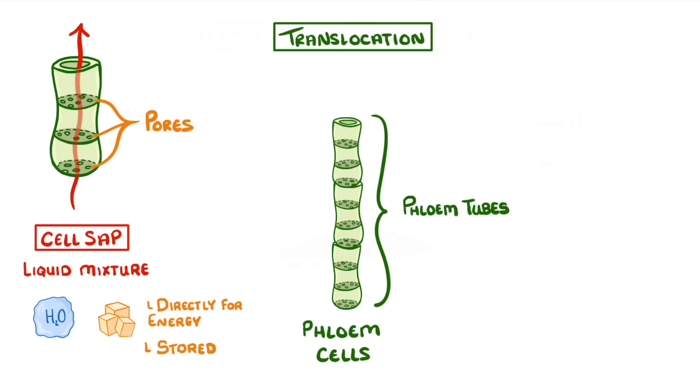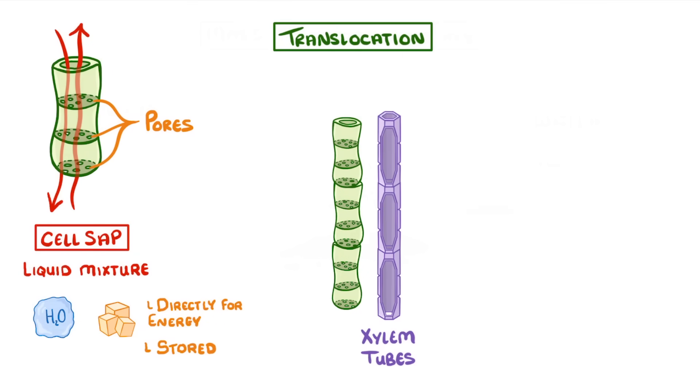One last thing to point out is that the phloem can transport substances in either direction, so up or down the plant. Next to the phloem tubes we have xylem tubes. These are also made up of a column of cells, but this time they're dead xylem cells with no ends between them.